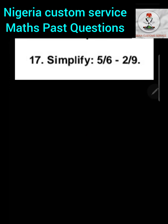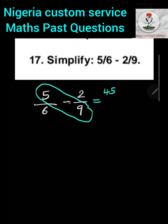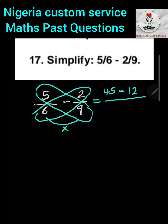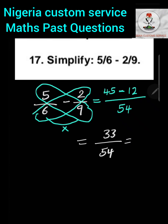Question 17: Simplify 5 over 6 minus 2 over 9. This is a subtraction of fractions. The fastest way is to cross-multiply: 9 times 5 gives 45, then minus 6 times 2 which gives 12, all over 6 times 9 which is 54. So we get 33 over 54. Dividing both numerator and denominator by 3 gives 11 over 18.